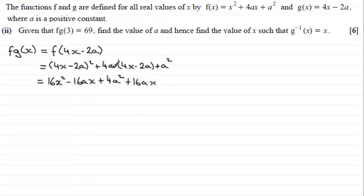And then minus 8a² and then plus a² on the end there. And if I simplify this, I've just got the 16x², the ax terms minus 16ax and 16ax they cancel one another out, then I've got 4a² minus 8a² plus a² and that gives me minus 3a².